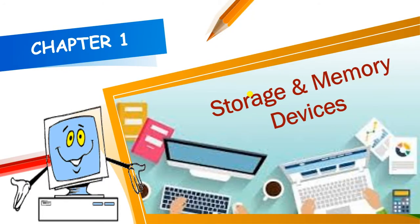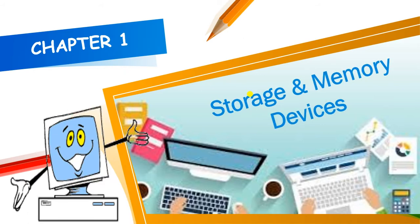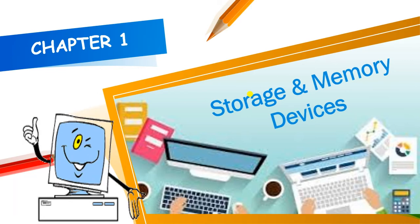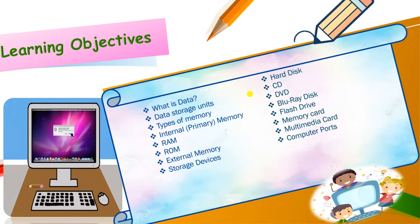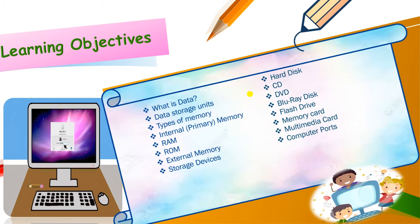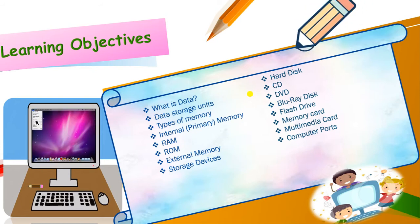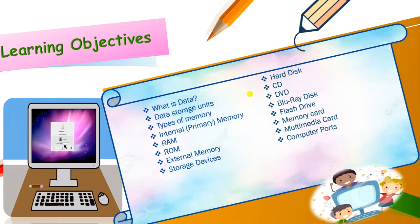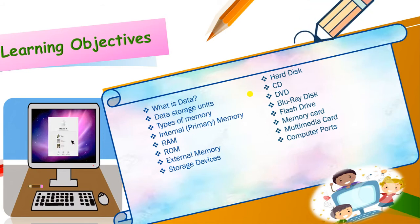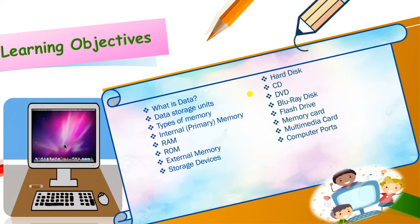Our first chapter is Storage and Memory Devices — where we store data in the computer, what are the memories of the computer, where the computer stores the data, and what devices are used to store data. This is all we will study in this chapter. The learning objectives — the topics we will learn — include data storage units, types of memory: internal memory (RAM, ROM), external memory, storage devices (hard disk, CD, DVD, Blu-ray disc, flash drive, memory card, multimedia card), and computer ports.